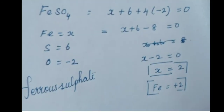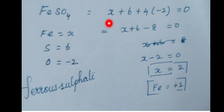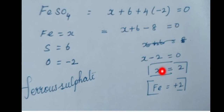First example: FeSO4, ferrous sulfate. Let Fe = X. Single sulfur oxidation state is +6. Oxygen oxidation state is -2. Calculation: X + 6 + 4(-2) = 0 → X + 6 - 8 = 0 → X - 2 = 0. Therefore X = +2. Iron oxidation state is plus two.